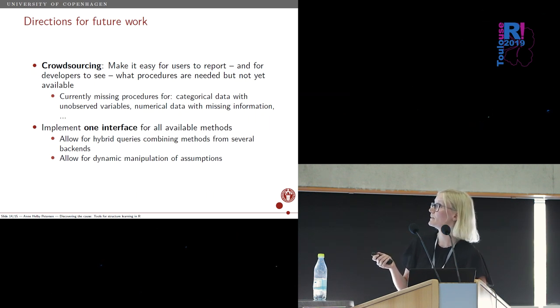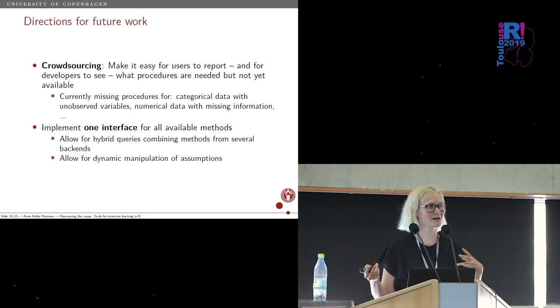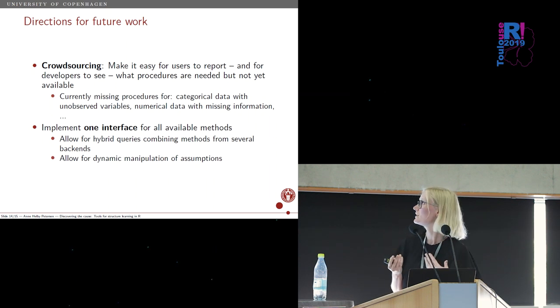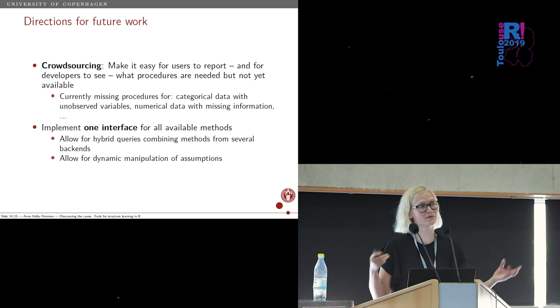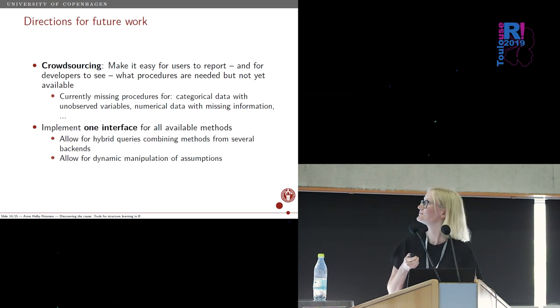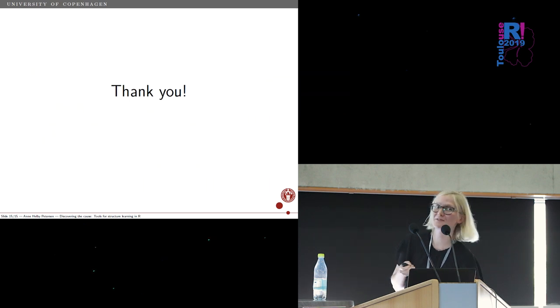At least in research, I feel like this is something that we sometimes lack. We get too far away from reality and we're just developing stuff that nobody uses anyway. For instance, right now I haven't been able to find any procedures for categorical data with unobserved variables or numerical data with missing information. I also think it could be cool to implement one interface for all the available methods, sort of like a caret package. And also it could be really cool if we could use hybrid queries where we combine different methods for different steps. That's all I have. Thank you for listening.